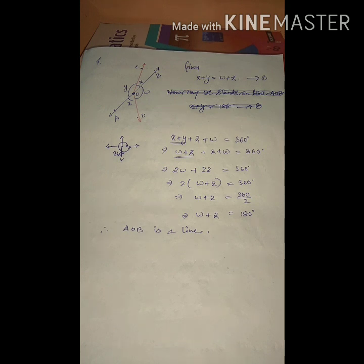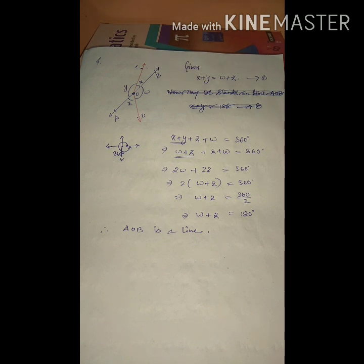Students, the remaining questions you have to complete on your own. In our next class we proceed from Axiom 6.3, covering parallel lines and transversals. Your task is to complete the example questions related to this topic and the remaining exercise questions in your homework copy.